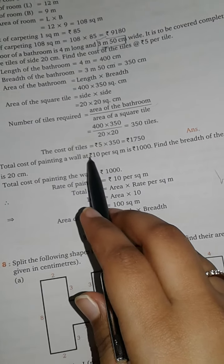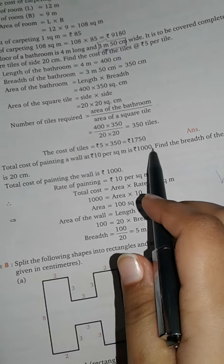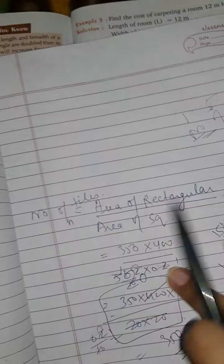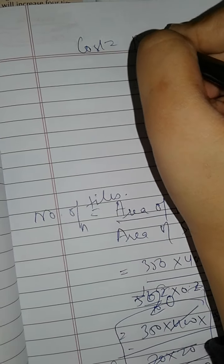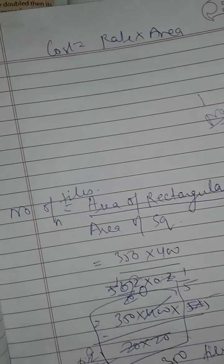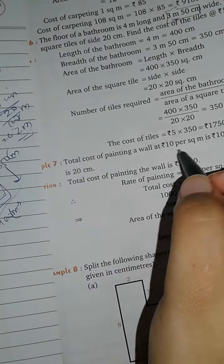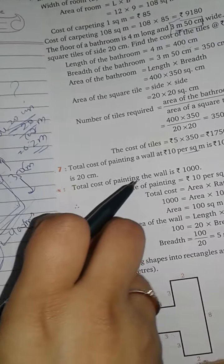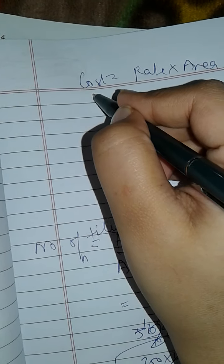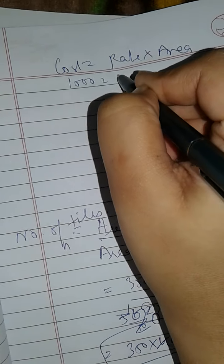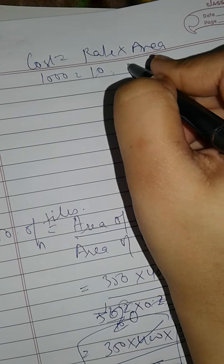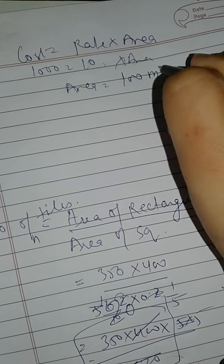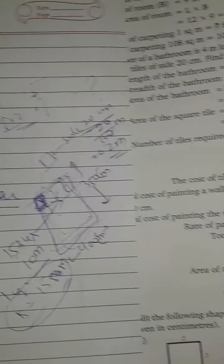Total cost of painting a wall at 10 per square meter is 1000. We use the formula: cost equals rate into area. Since 'square meter' is given, it is an area problem. Cost is 1000, rate is 10 per square meter, so area equals cost divided by rate, which is 1000 divided by 10, which is 100 square meters.